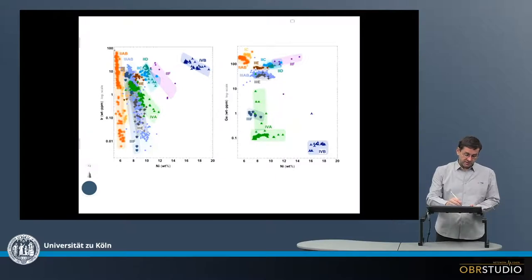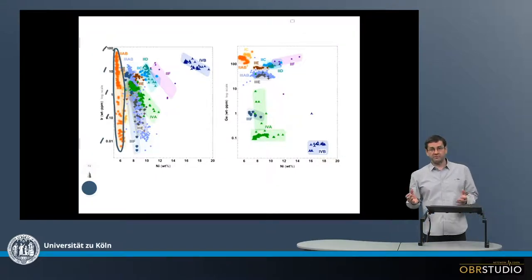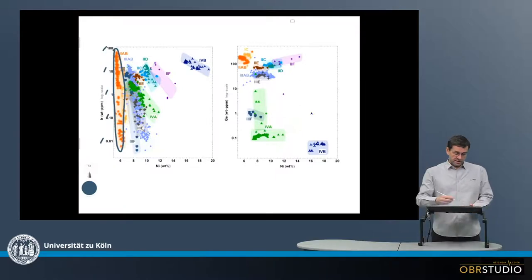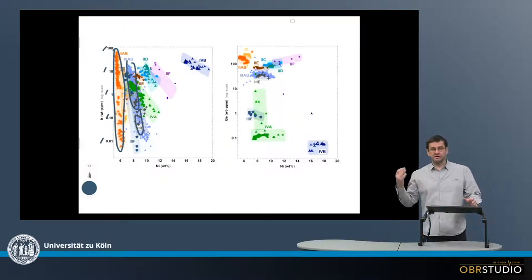For example, the 2AB iron meteorites have a range over one, two, three, four, five orders of magnitude. So this is a massive range. Others also have large ranges like the 3AB, 3E, and so on.